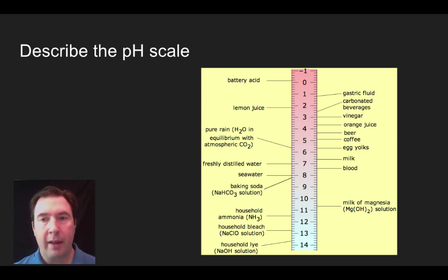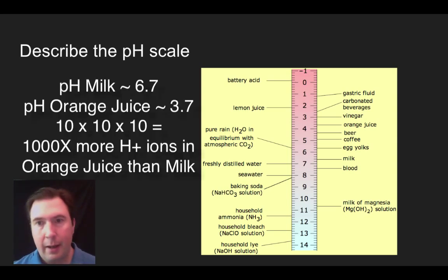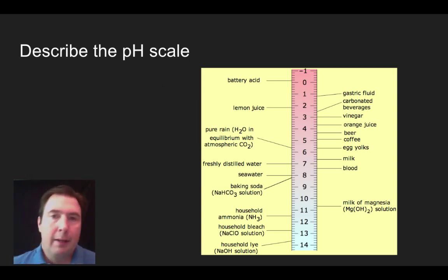All right, so you should have come up with a number that is high sixes for milk, and for orange juice it's the high threes. Now if you got really nitpicky and went at it, you might be able to find some exact pHs, but hopefully what you saw is that as I go from high sixes to high fives, I go ten times. I go from high fives to high fours, I go to a hundred times. And from high fours to high threes, I go another ten times. So you should see that this is a thousand times more acidic. Orange juice is a thousand times more acidic than milk. Okay, so that's the example I was hoping you could come up with, and we could do lots and lots of examples of these.